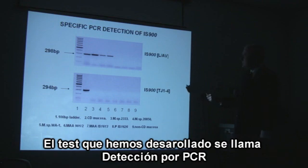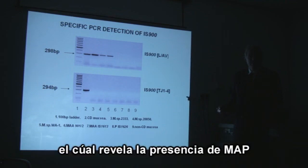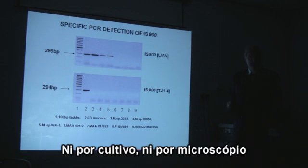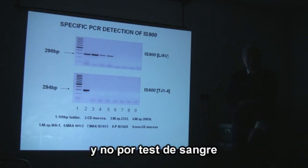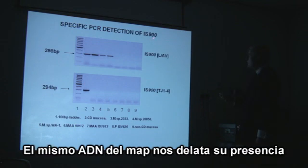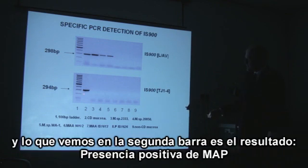MAP can be very difficult to detect. It grows very poorly in culture. It's very difficult to see down the microscope, and it hides from the immune system. The test we developed was a PCR test, which revealed the presence of MAP — not by culture, not by microscopy, and not by doing a blood test, but by revealing the presence of its specific DNA.